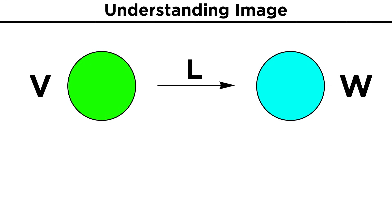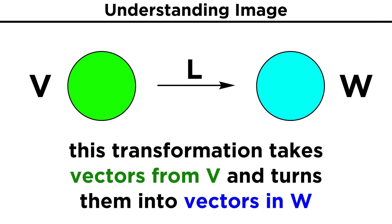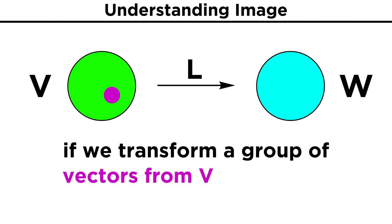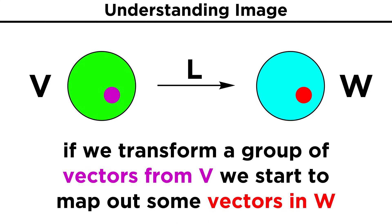Say we have a linear transformation that maps from the vector space V to the vector space W. As we know, this will involve taking vectors from V and turning them into vectors in W. If we transform a group of vectors from V, we end up starting to map out several vectors in W.